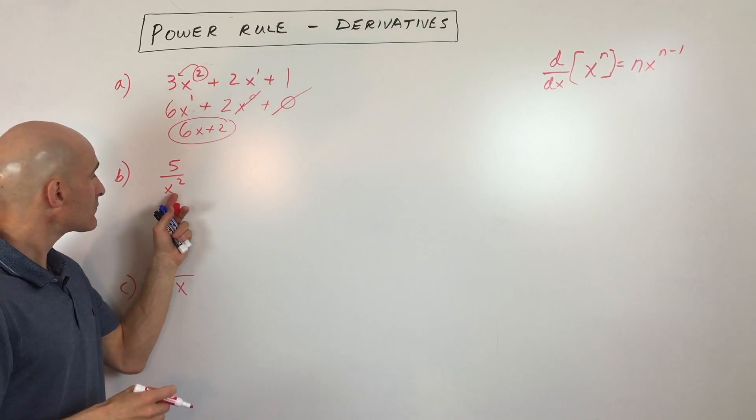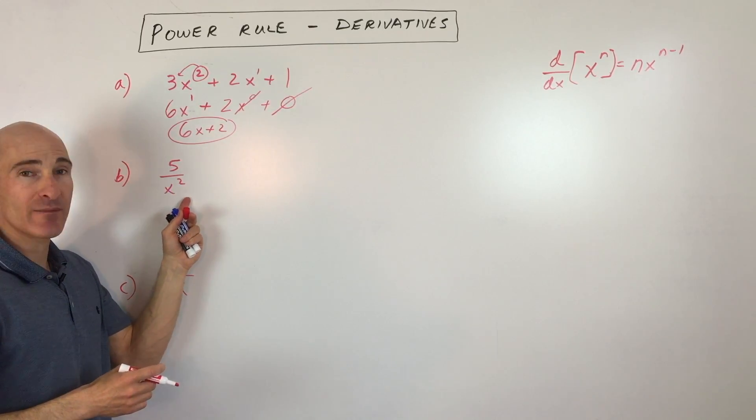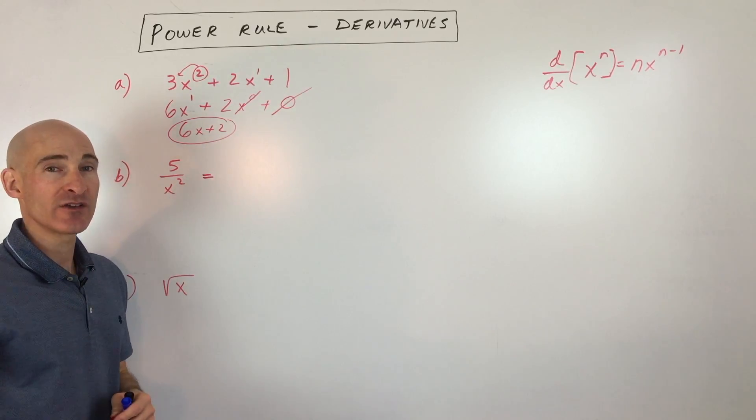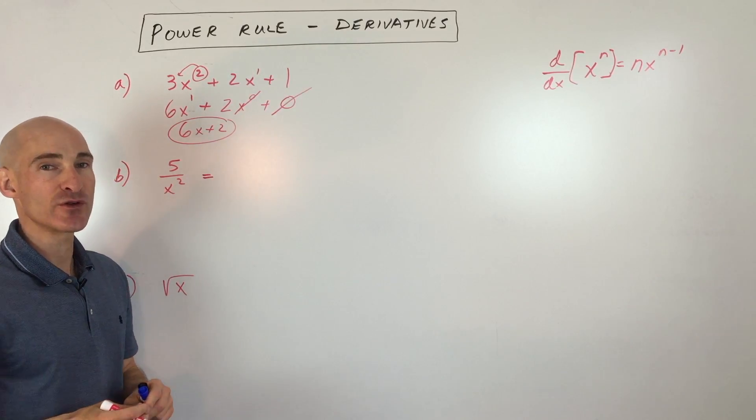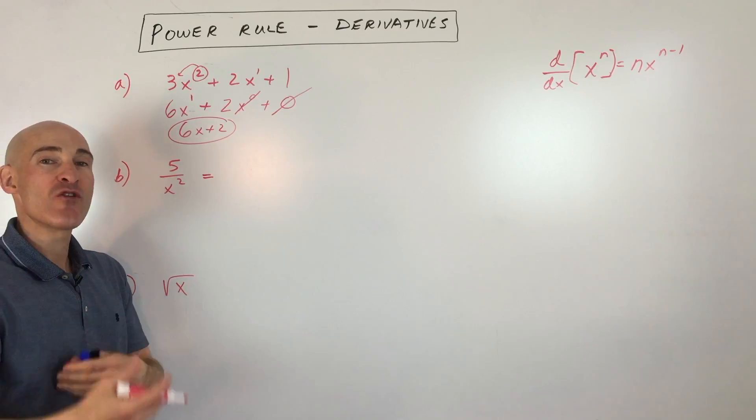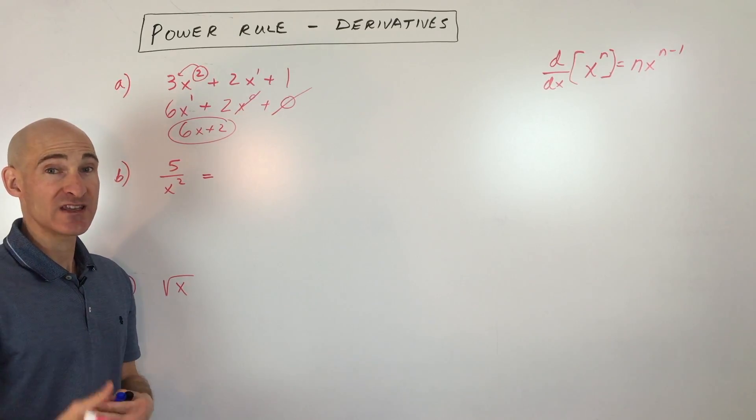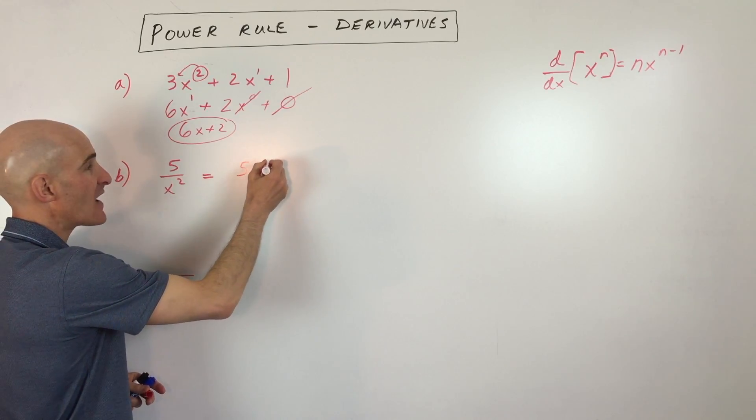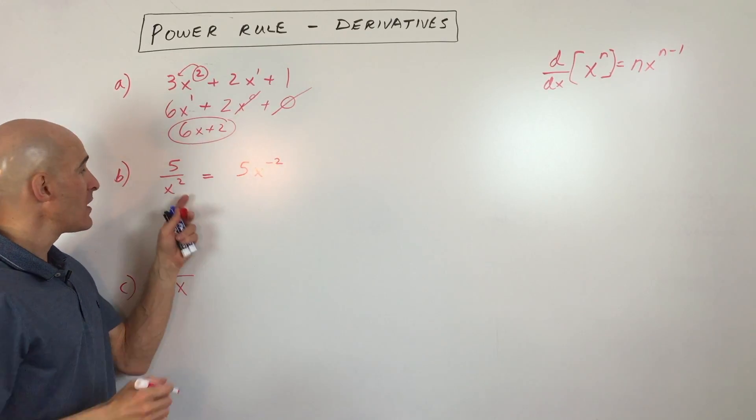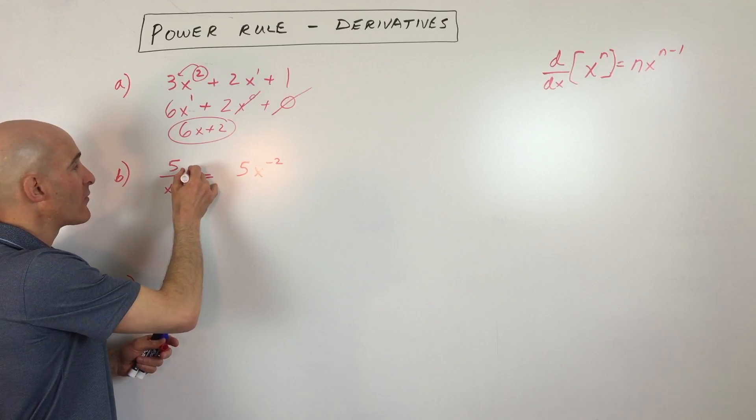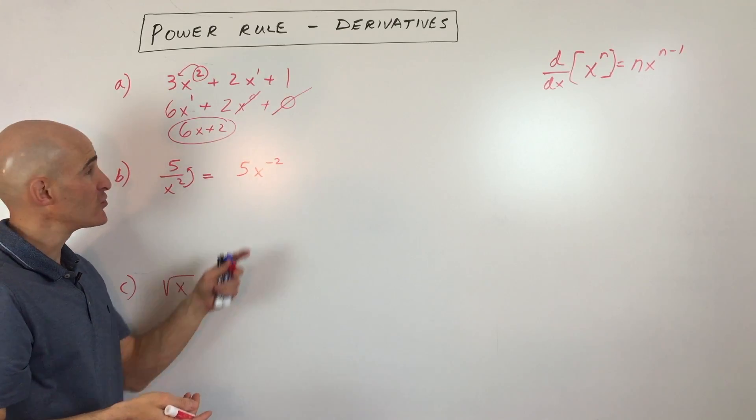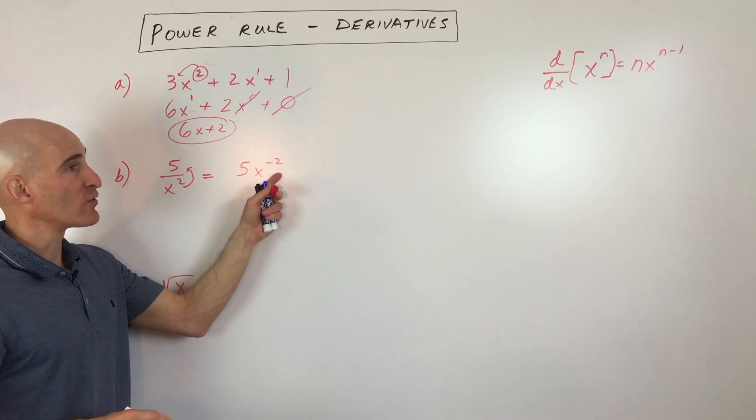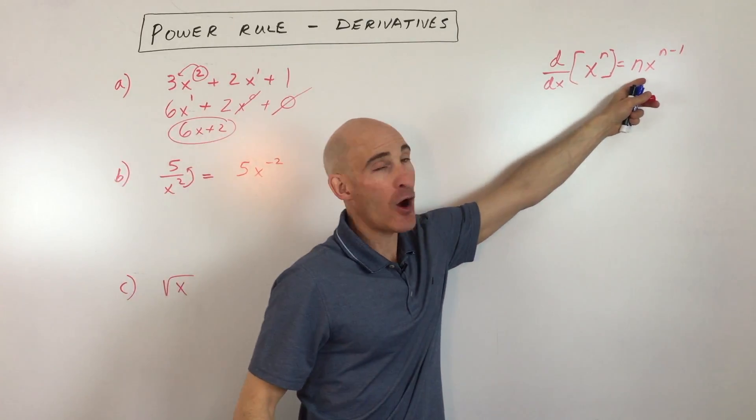Let's look at another example. So this one here, we have 5 divided by x squared. One of the important things in calculus as you're starting to get into this course further is that you'll be rewriting and putting in different forms to make it easier to work with. So what we can do is we can rewrite this as 5 times x to the negative 2 power, because remember, when you bring this from one side of the fraction bar to the other, you change the exponent sign to the opposite. So we've rewritten it so it fits this power format.